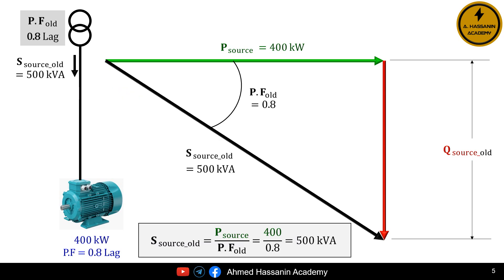So the total power of the source before installing the capacitor, that is, before improving the power factor, S source old, is equal to the active power of the source P source divided by the old power factor, which equals 400 kilowatts divided by 0.8. Thus, S source old equals 500 kilovolt amperes.